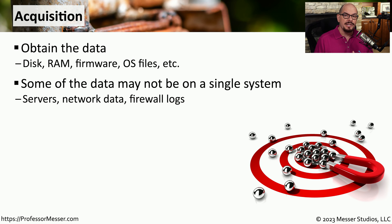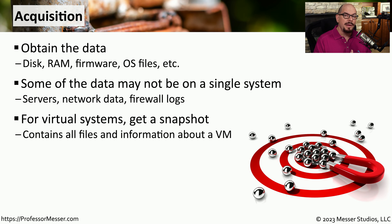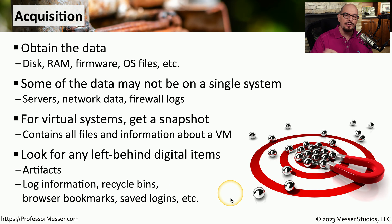We may find that this is an attack that took place over a number of different systems, so we may need to collect data from multiple devices — including servers on the network, network devices, and logs on a firewall. If this is a virtual system, we may want to take a full copy of everything associated with that VM, such as a snapshot that contains all of the files and information about that virtual machine. Some of the most interesting information may not be in the most obvious places — there's data inside log files, data stored in a recycle bin or temporary storage area, browser bookmarks, saved logins, and other temporary files that can gather more details about the particular event.